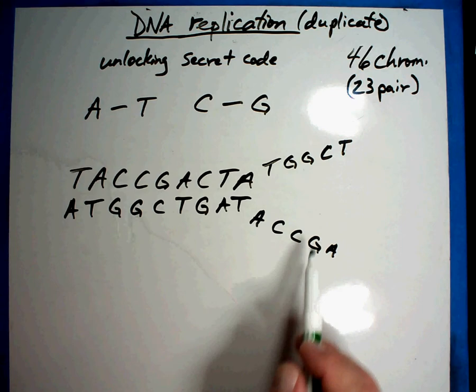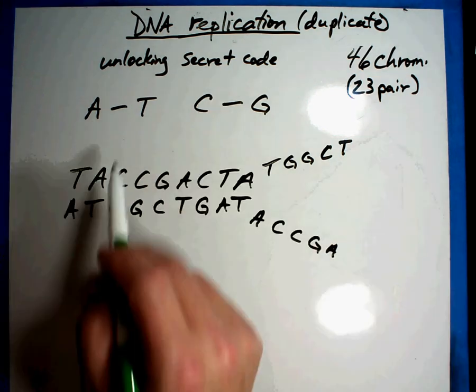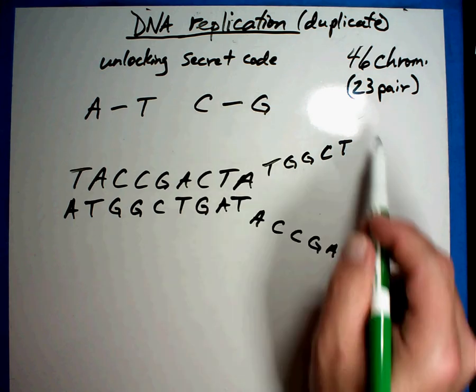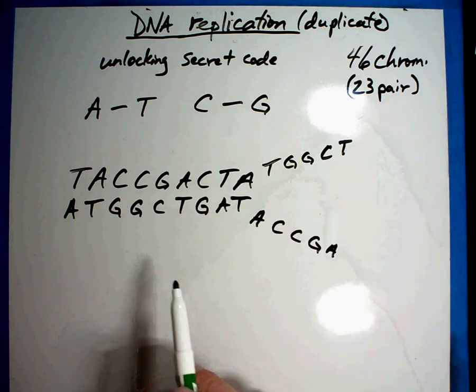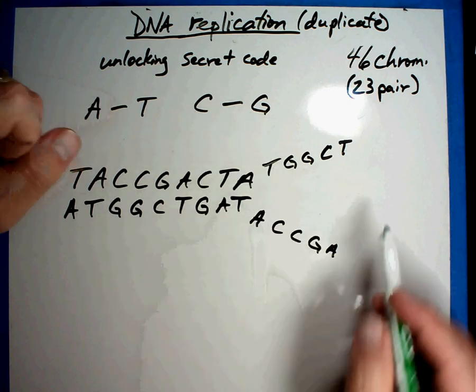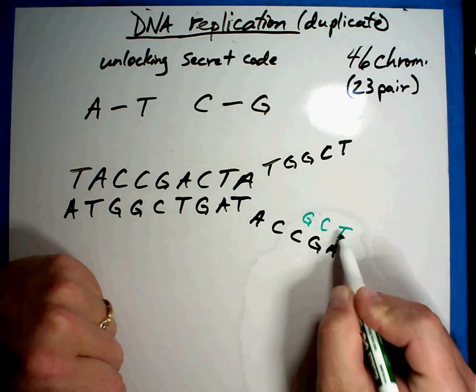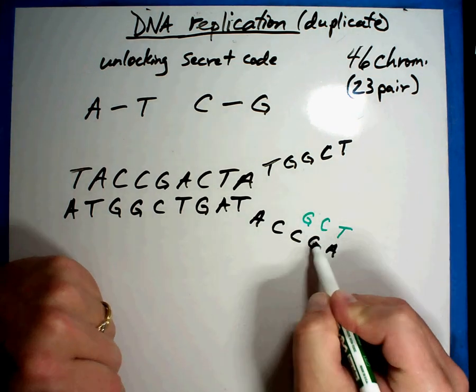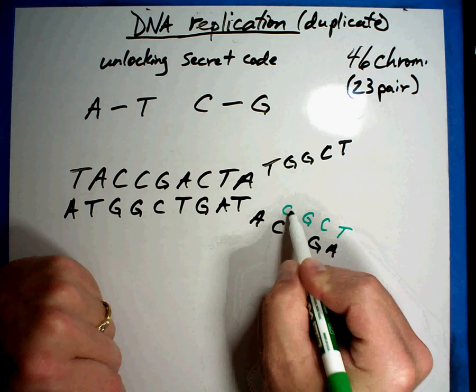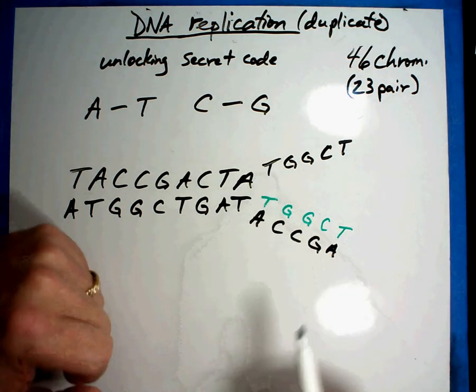A's and T's and C's and G's are floating around in the cell looking for somewhere to hook on. And so they're just floating along, sort of like a piece of Velcro. And so what happens is when you get to a point where it's open like this, automatically they start plugging in where they go. T's go with A's, C, G, G, C, G, C, T, A. And so they just find a place to plug on.